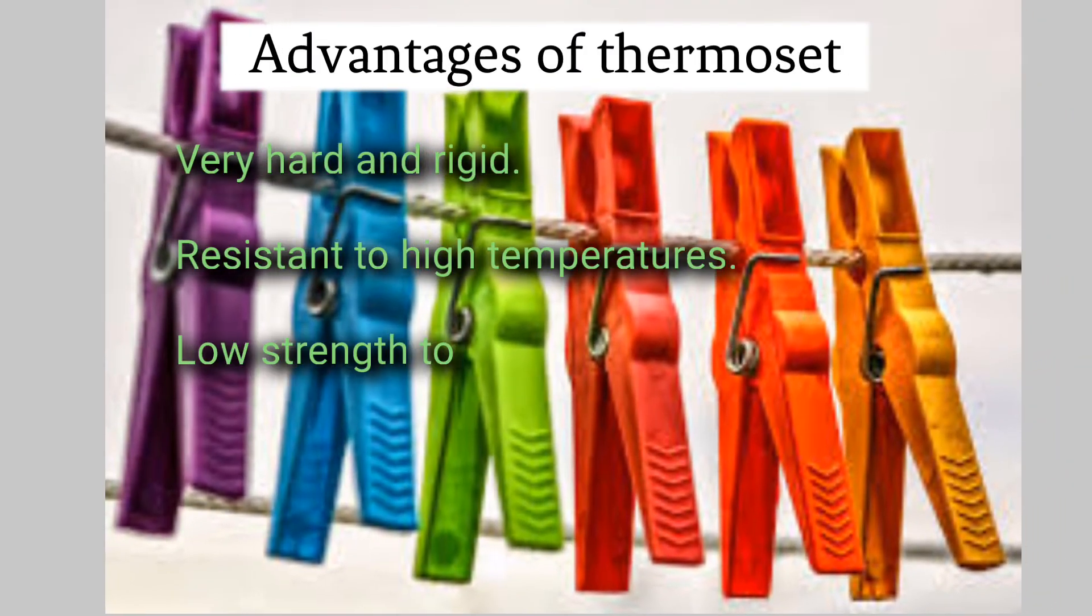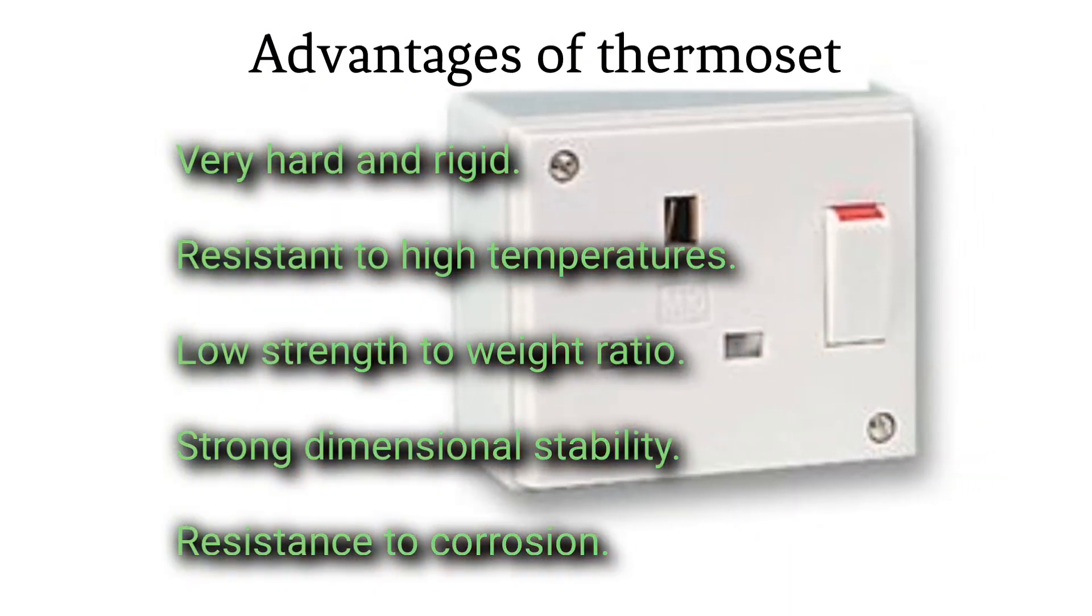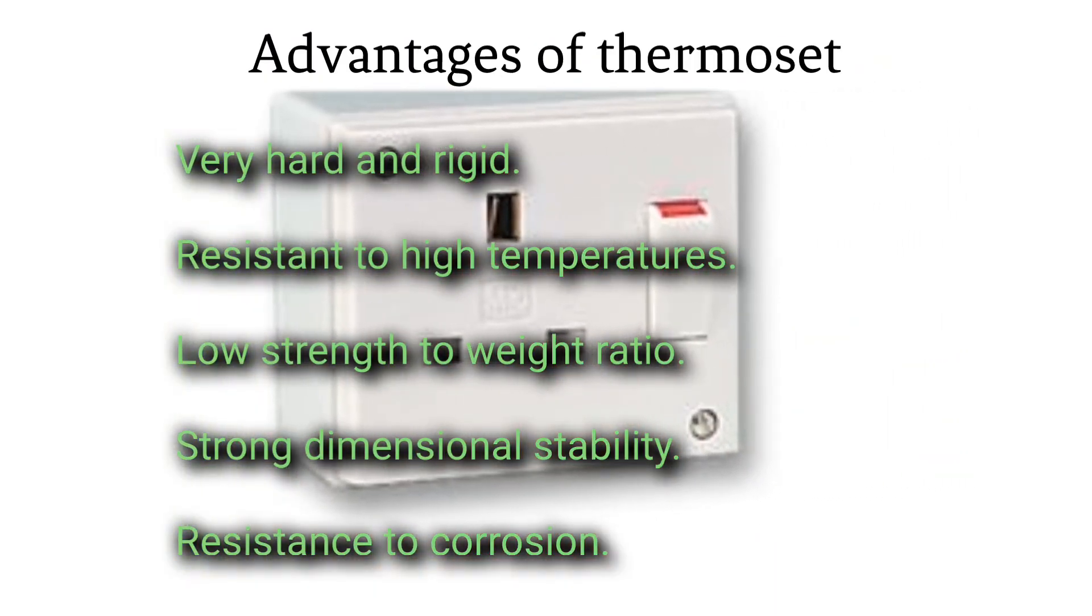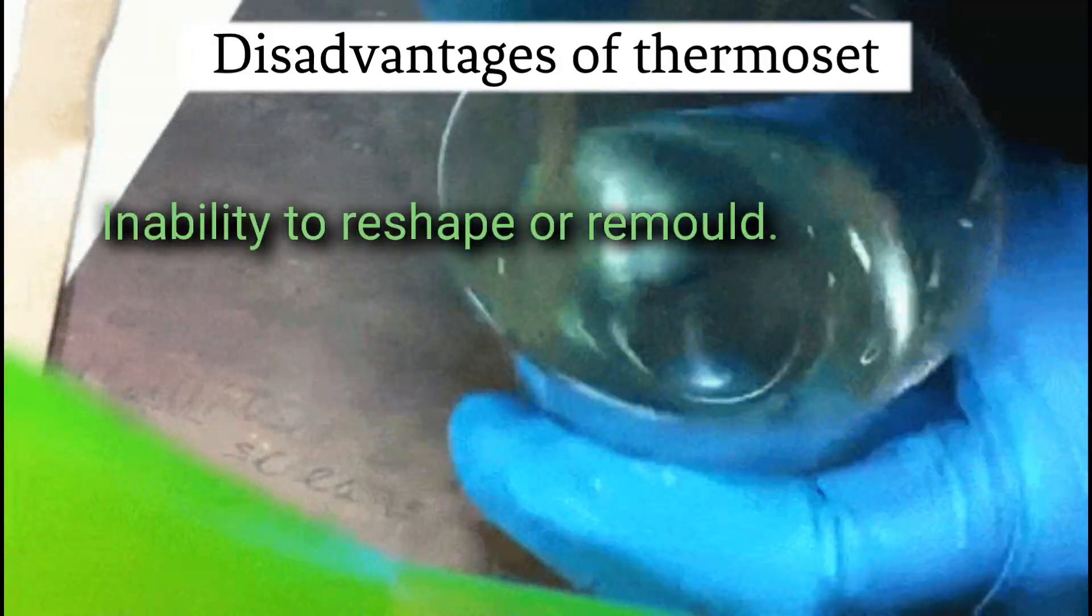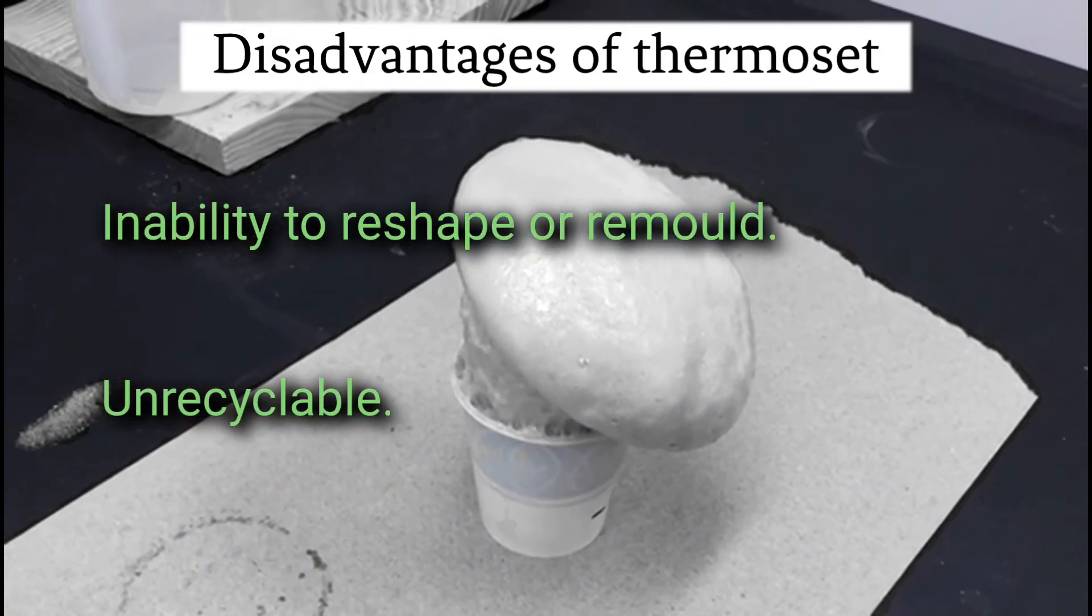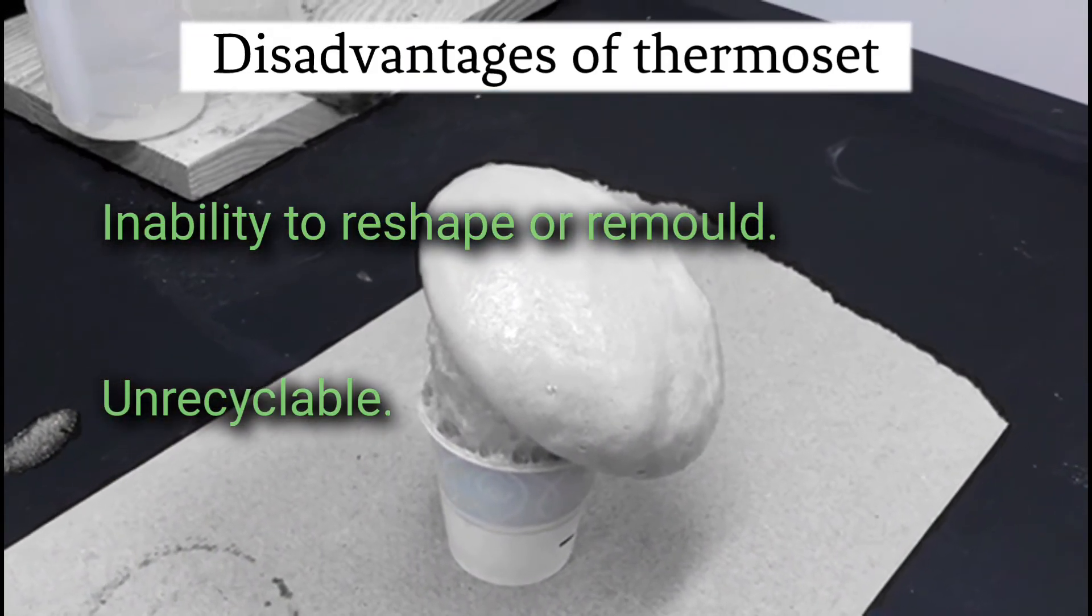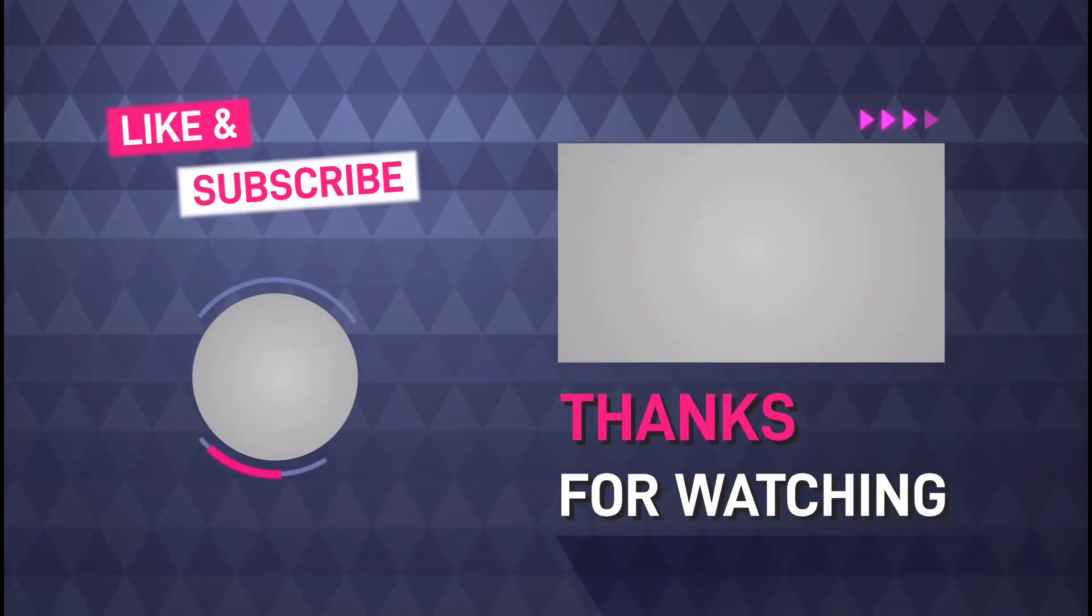Advantages of thermoset: Very hard and rigid. Resistant to high temperature. Low strength to weight ratio. Strong dimensional stability. Resistance to corrosion. Disadvantages of thermoset: Inability to reshape or remold. Unrecyclable.